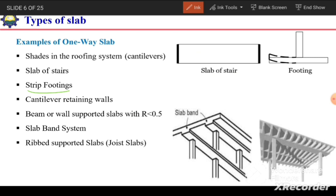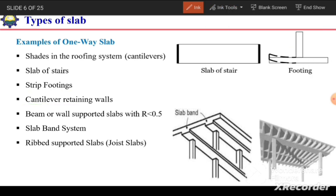Strip footings are also a case of one-way slab. The footing supporting a wall has two sides, each of which is designed as a one-way slab separately. Similarly, in a cantilever retaining wall, the foundation base on both sides is considered a one-way slab, and the vertical stem wall can also be considered a one-way slab.